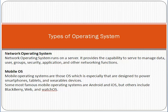Finally, the mobile operating system — these are operating systems that are especially designed to power smartphones, tablets, and similar devices. Some of the most famous mobile operating systems are Android and iOS, but others include BlackBerry, Web OS, and watchOS, etc.